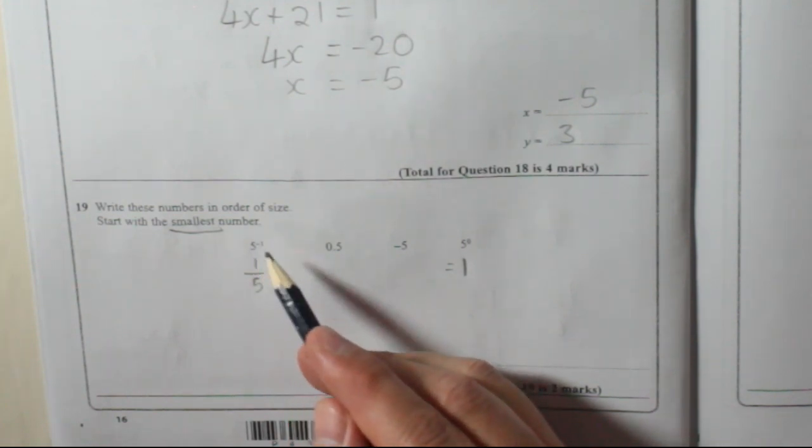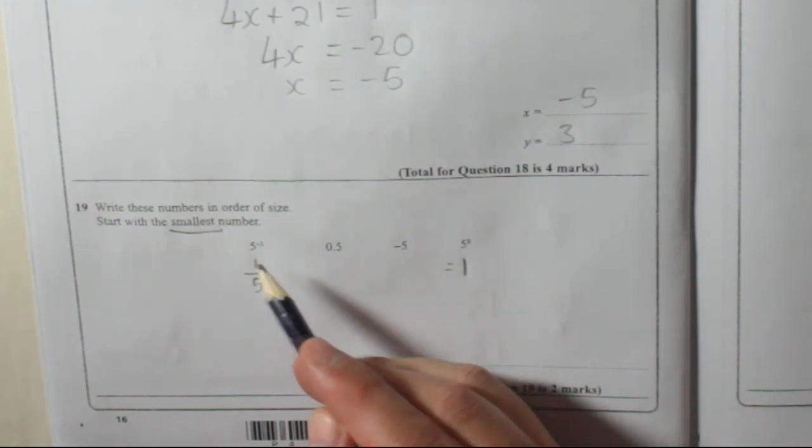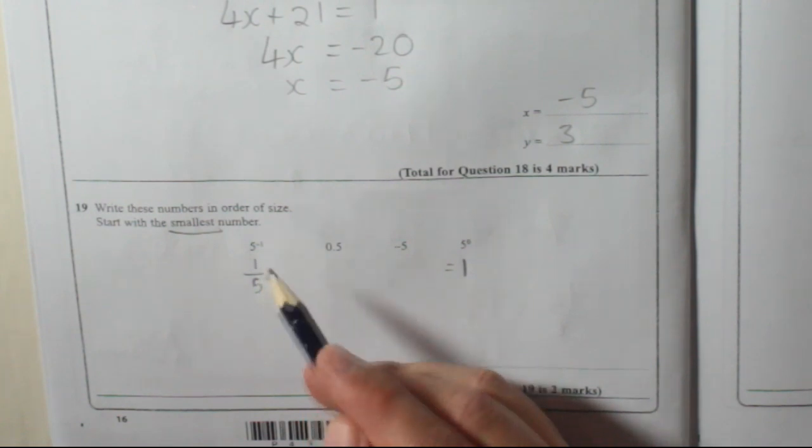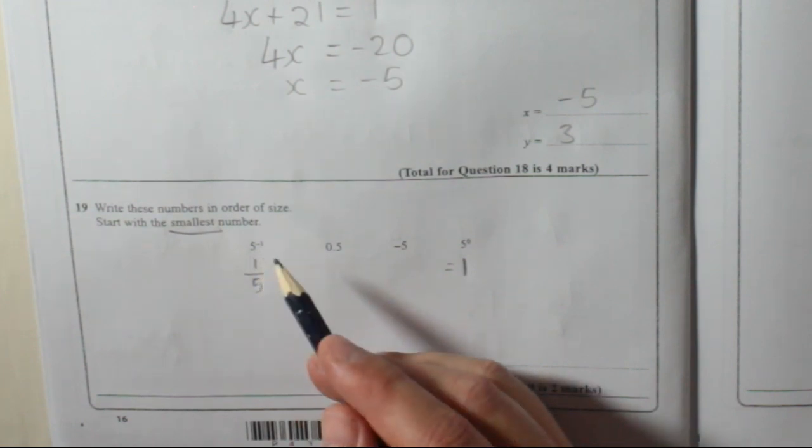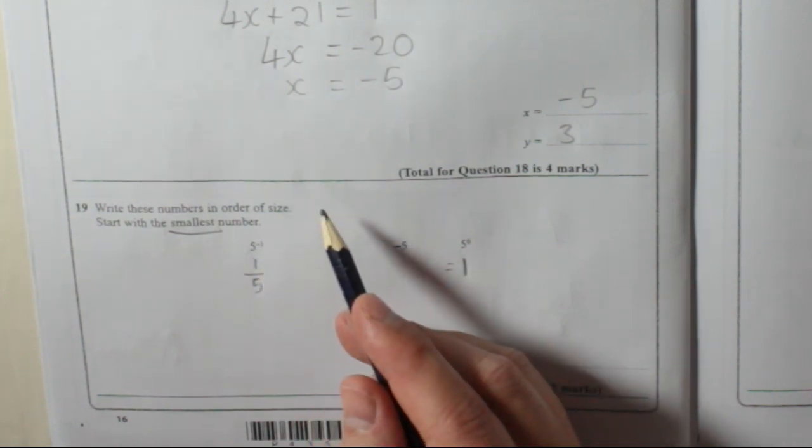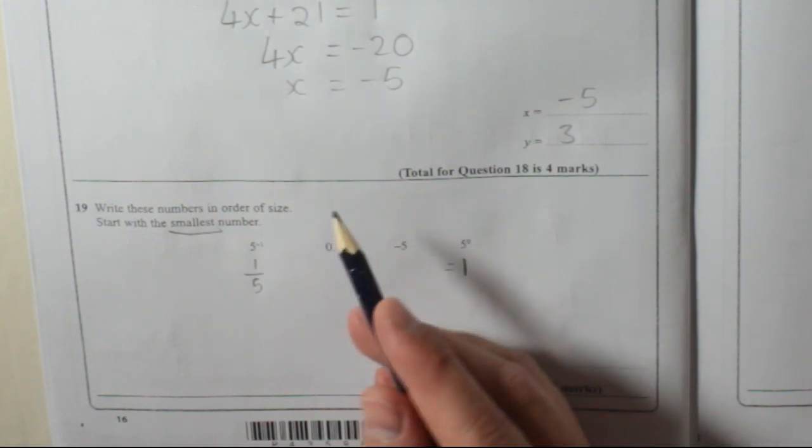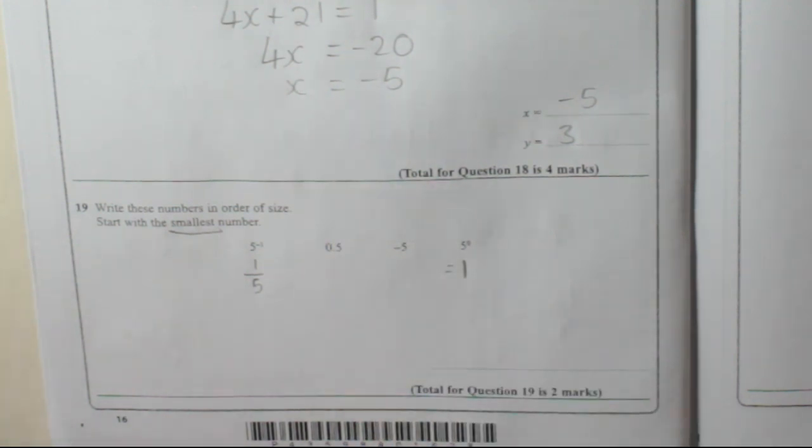For example, 7 to the minus 1 would be 1 over 7. 8 to the minus 1 would be 1 over 8. 10 to the minus 2 would be 1 over 10 squared. So basically, the power becomes positive. 15 to the power of minus 5 would be 1 over 15 to the power of 5.